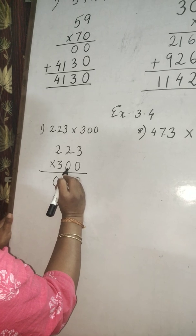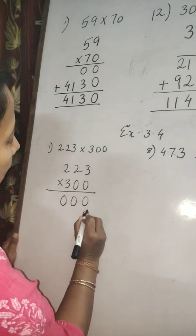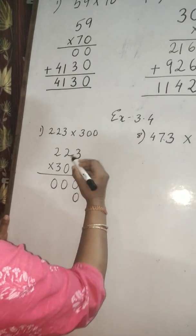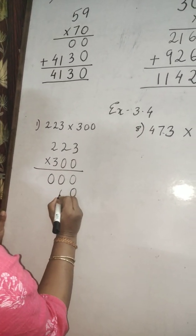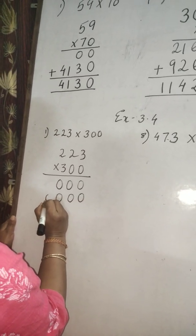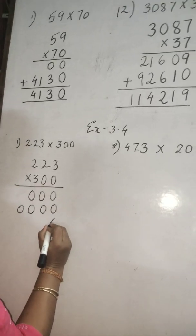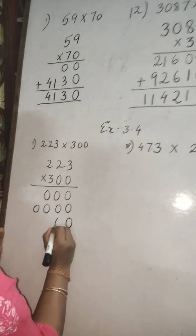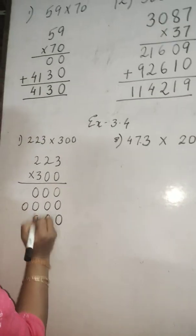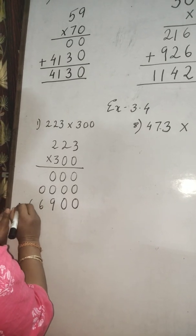Now we have to multiply with the 3rd digit. So you have to leave the 1st place and 2nd place. 3 times 3 is 9. 3 times 2 is 6. 3 times 2 is 6. Now add. Give the plus sign: 0 plus 0 is 0, 0 plus 0 is 0, 0 plus 9 is 9, 0 plus 6 is 6, and 6. So the answer is 69,900.